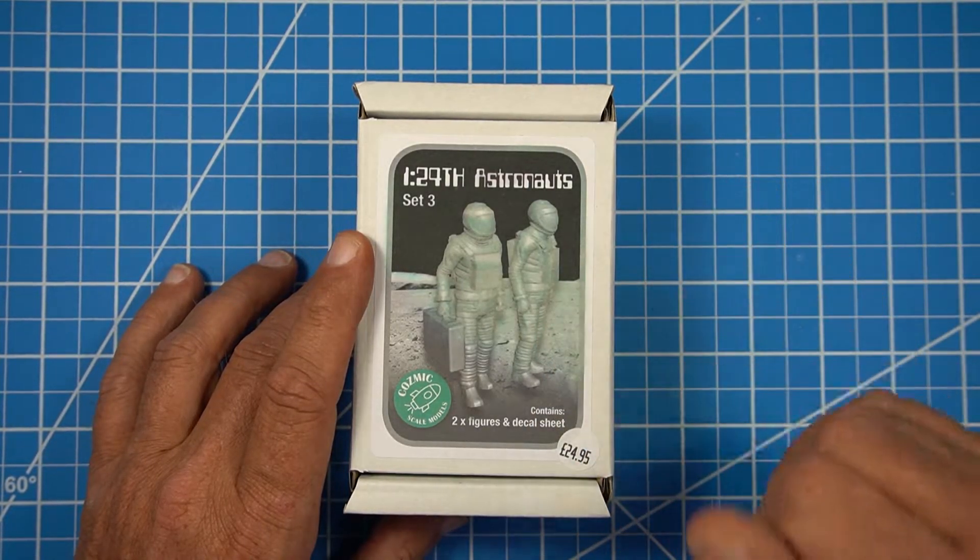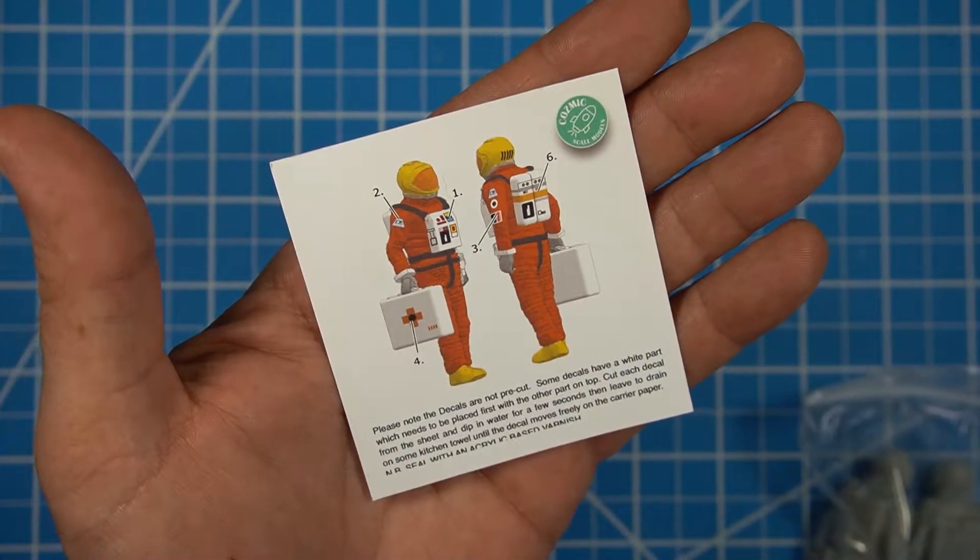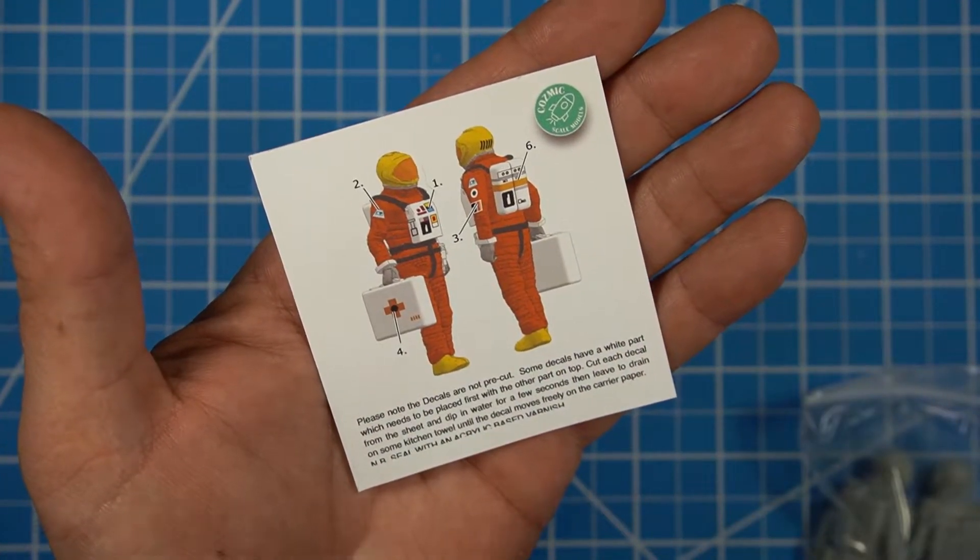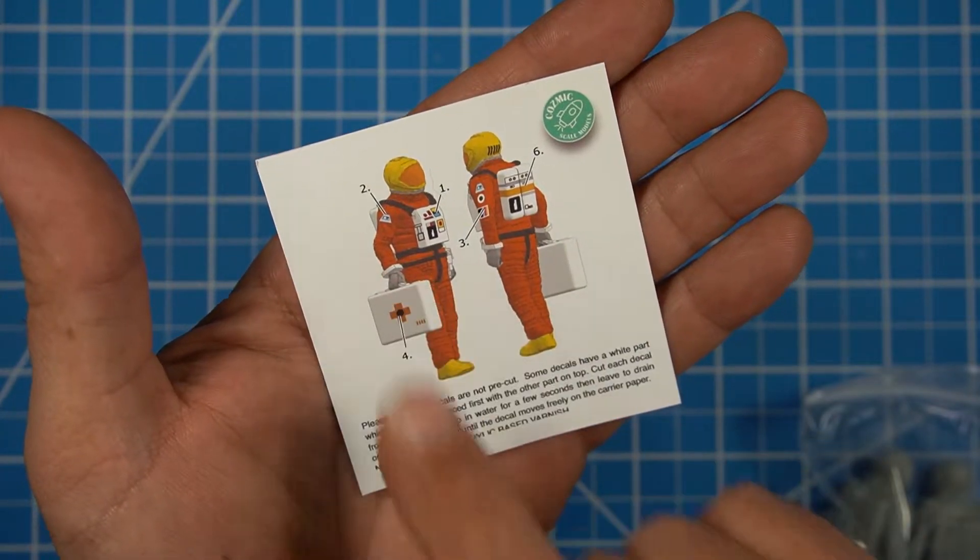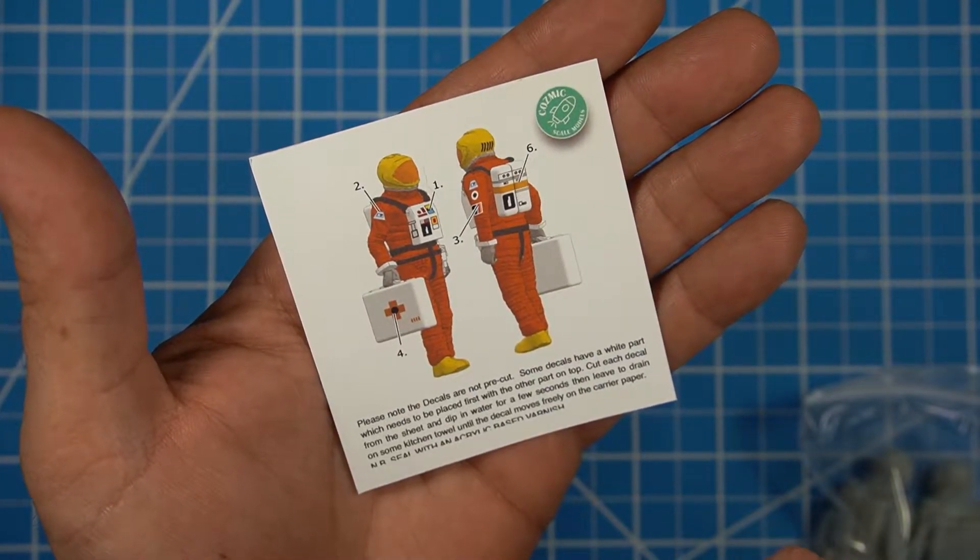The kit includes two figures and a decal sheet. Let's take a look. Inside the box comes this single sheet instruction so you know the placement of your decals front and back of the figure on his arms and also on the medical case.